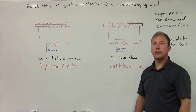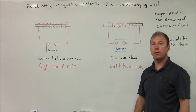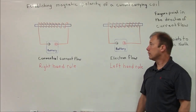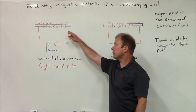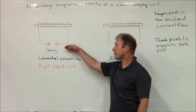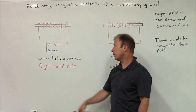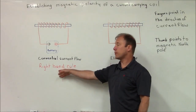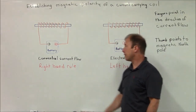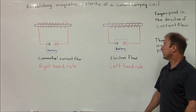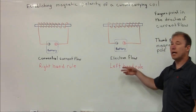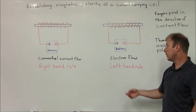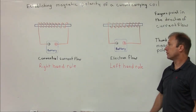We want to establish the magnetic polarity of a current-carrying coil. Here we have a current-carrying coil hooked up to a battery using conventional current flow — in this case you'd have to use a right hand rule. And here we have a current-carrying coil hooked up to a battery using electron flow, and we'd have to use a left hand rule.